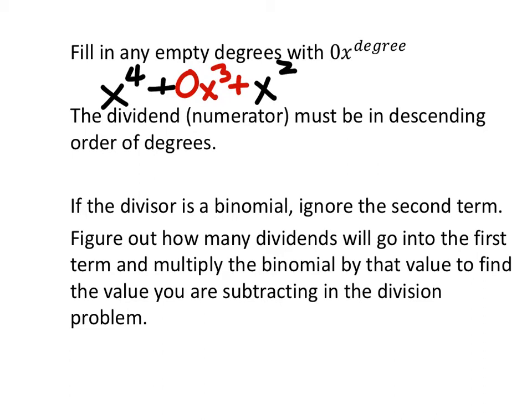The dividend, or the numerator, must be in descending order of degrees, which is actually pretty crucial. If the divisor, which is the denominator, is a binomial, ignore the second term until it's time to multiply. That may sound really confusing right now. That's because we didn't really define what we're talking about. This is long division.